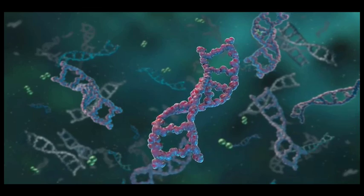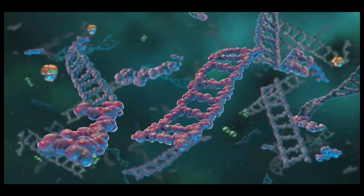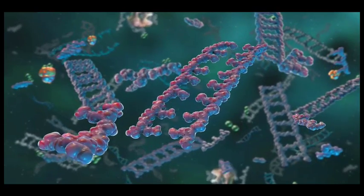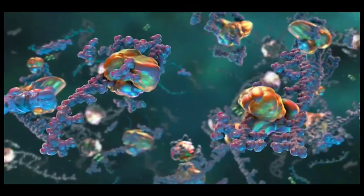Each well of this array is pre-spotted with one pair of second stage PCR primers. These second stage PCR primers are designed to amplify sequences contained within the products from the first stage PCR.